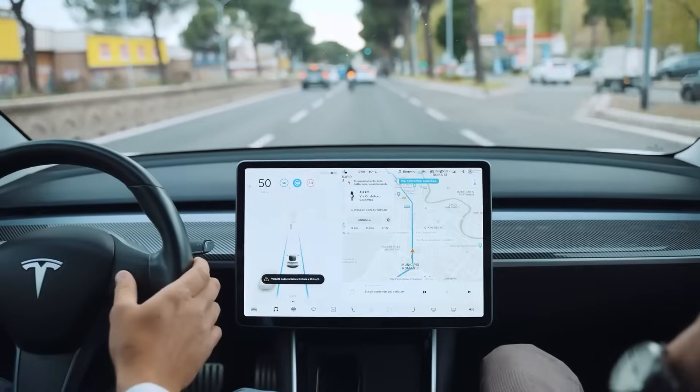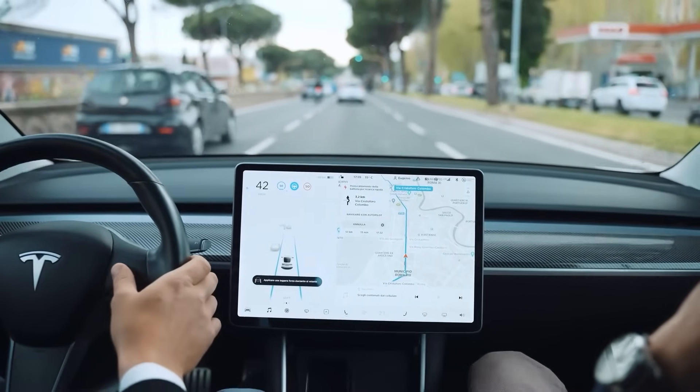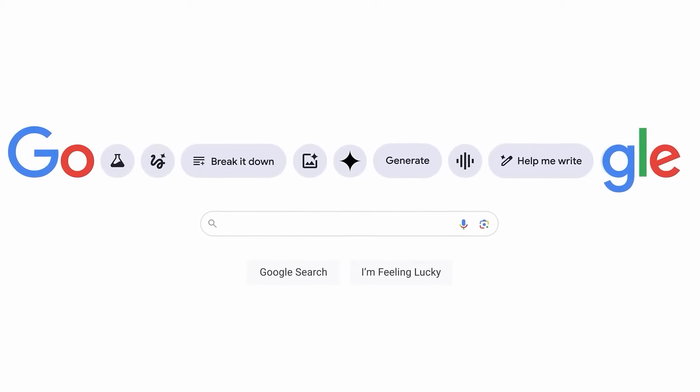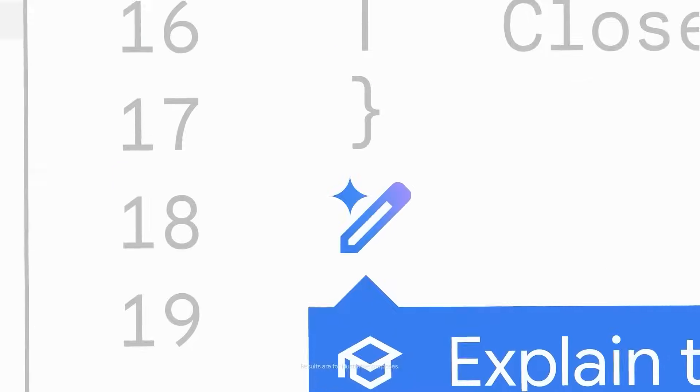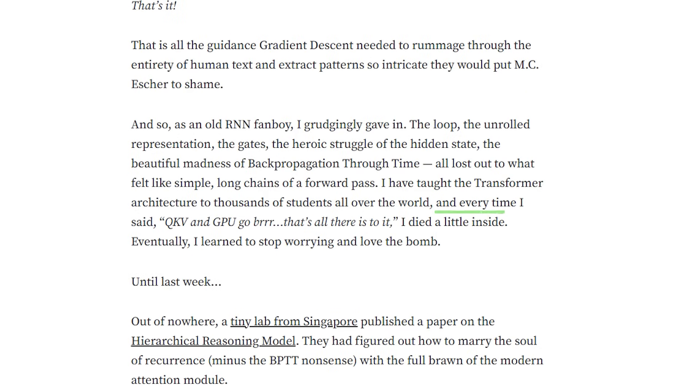Removed most of the handcrafted rules in favor of bigger networks and more data, and it was a tremendous improvement. Language models and general-purpose AI experienced an unbelievable jump in capabilities by just embracing it and relying on deeper networks, more data, and more compute. And with each success, more and more scientists joined the camp, some of them suppressing their instinct in favor of the evidence. And every time I said QKV and GPU go purr, that's all there is to it, I died a little inside.